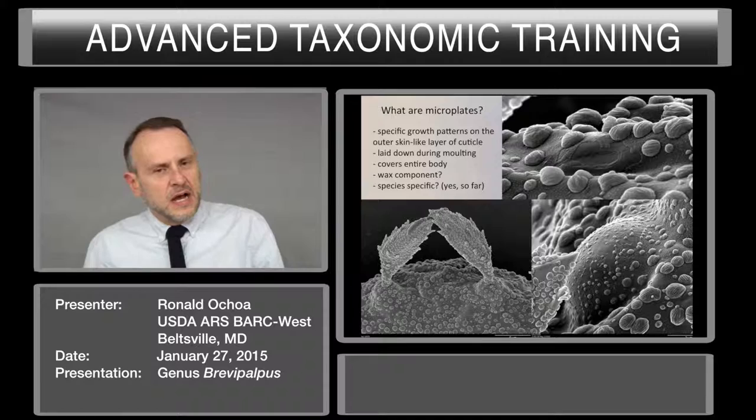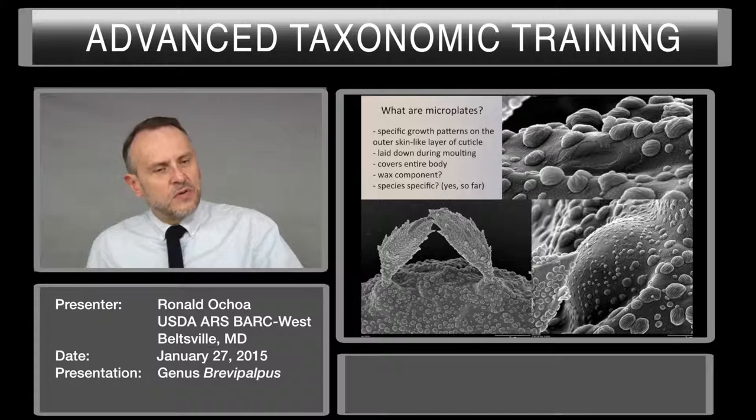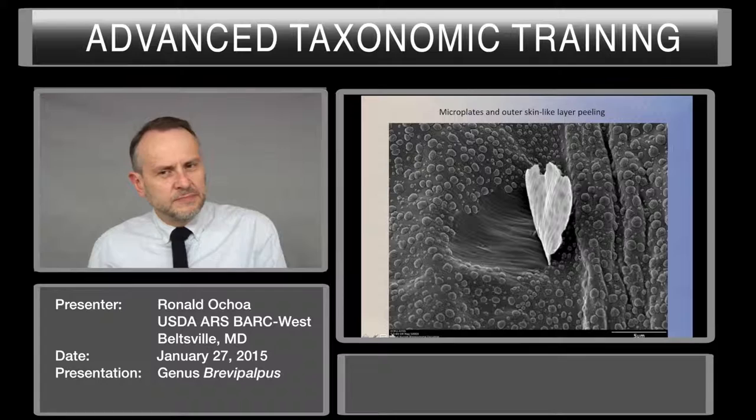We are using microplates — these are the wax-like structures that cover the mite — and they help us to separate the different species by the shape of these microplates, which some of them look like cookies with little diagrams or shapes of lines over them. They are specific so far, and they can peel off easily.